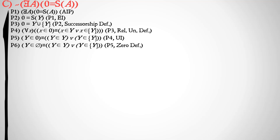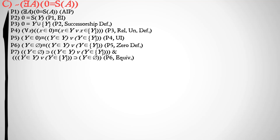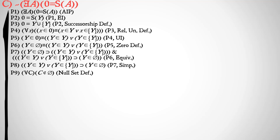We apply the definition of zero as the null set, because the null set has defined properties about membership that will help us. We use our zero definition to substitute, then use equivalence to split the biconditional into two conditionals — one in each direction — and simplify to get: Y is a member of Y or Y is a member of the set of Y implies Y is a member of the null set.